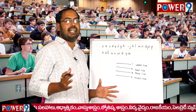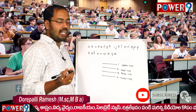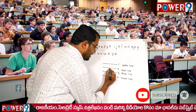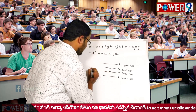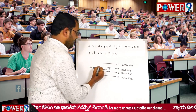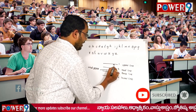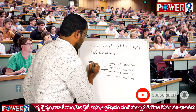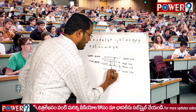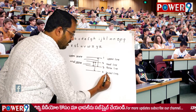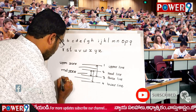Coming to non-cursive handwriting, if a letter exists between the headline and baseline, that region is called the mid zone. If a letter exists between the upper line and baseline, that is called the upper zone. If a letter touches the headline and lower line, that is called the lower zone.